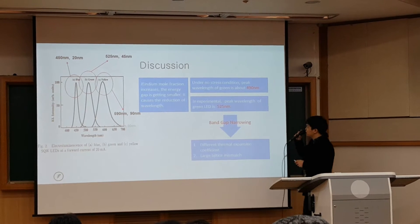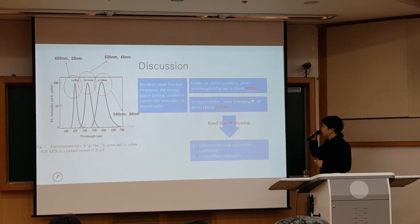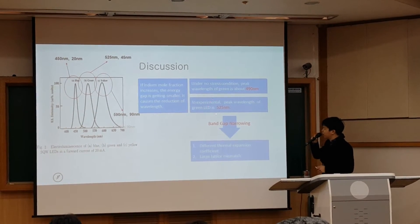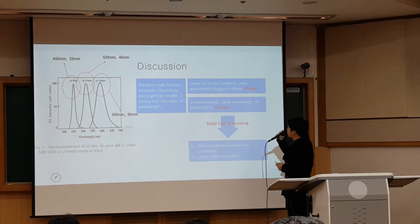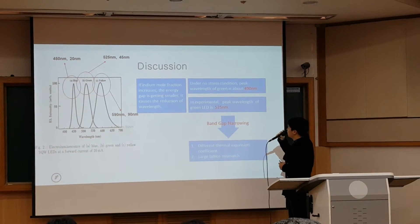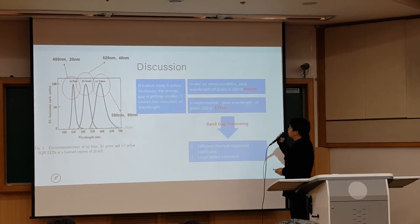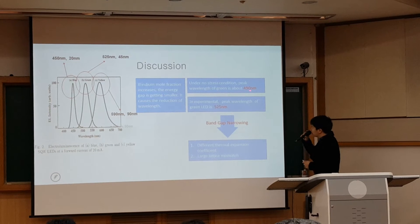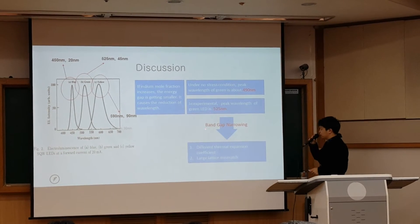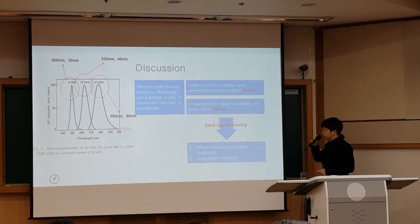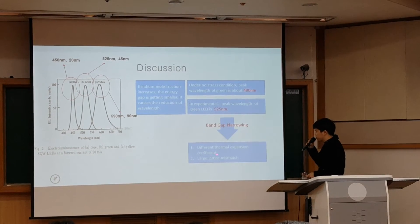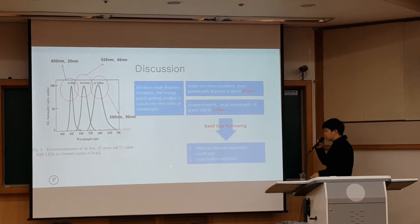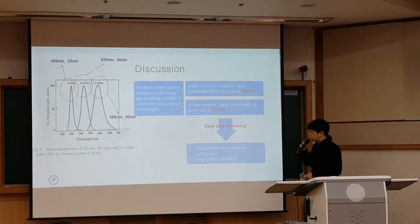The experimental peak wavelength of the green LED is about 525 nanometers. But for reference, under no-stress conditions, the peak wavelength of green is about 490 nanometers — it is a little bit longer due to band gap narrowing. We can explain this band gap narrowing by two reasons: the first is the difference in thermal expansion coefficient, and the second is large lattice mismatch.